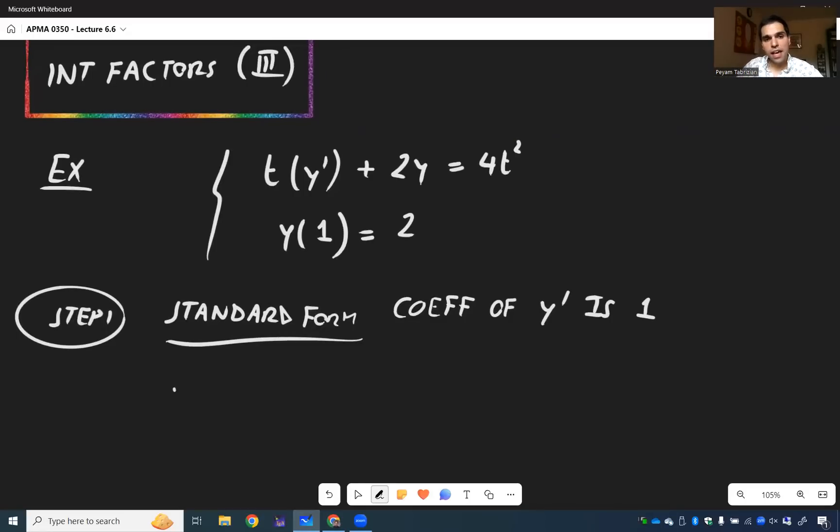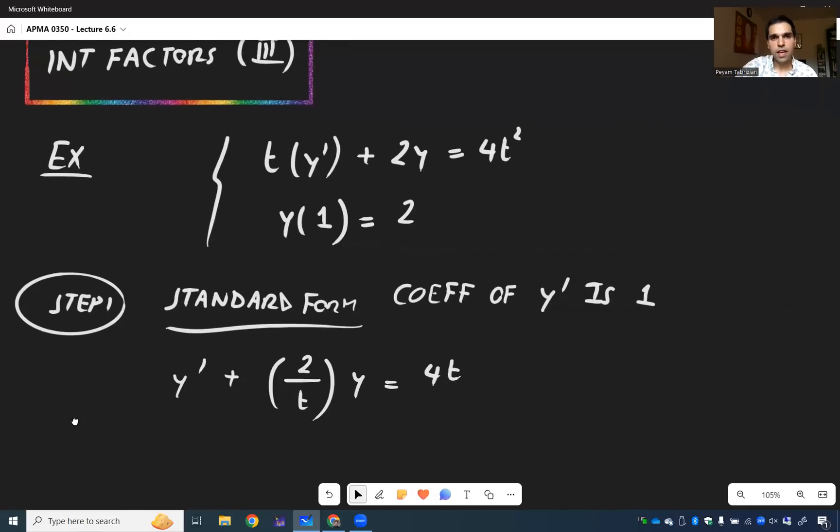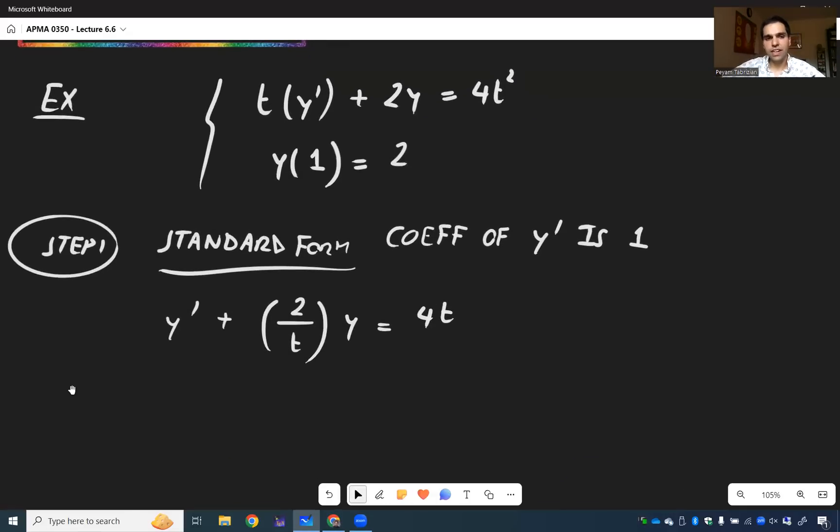We just divide by t and we get y prime plus two over t, y equals four t squared. Sorry, not four t squared, but four t squared divided by t. So four t. And then we can use the integrating factors method.